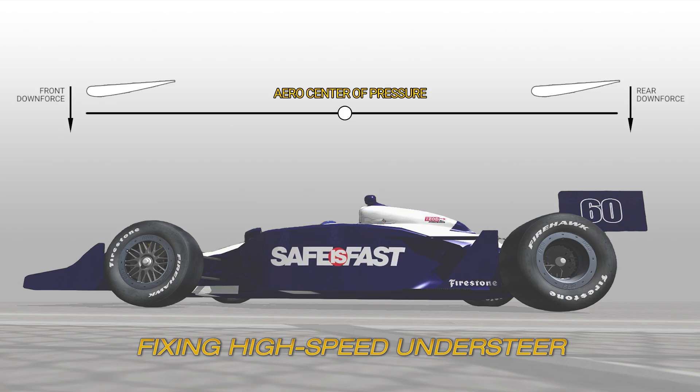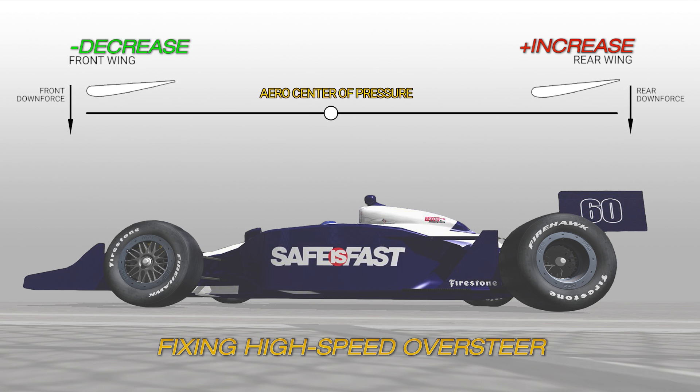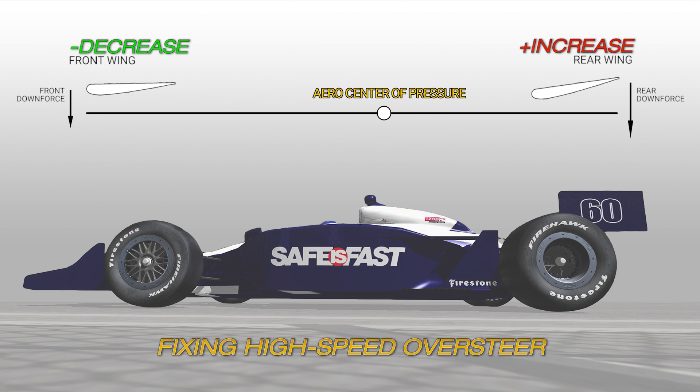If you've got high-speed understeer, as opposed to the mechanical fix where we moved balance rearward, for aerodynamics we want to move the aerodynamic center of pressure forward. That means more downforce on the front axle and a little bit less on the rear axle, which adds grip to the front and reduces high-speed understeer. For high-speed oversteer, we move the center of pressure rearward — add rear wing, take away front wing.